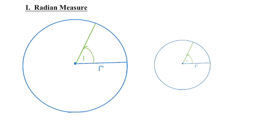This is one radian of rotation. And you can see that it doesn't matter how big or how small my circle is, that angle measure